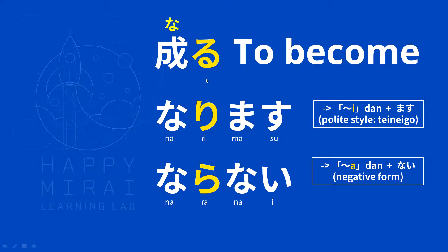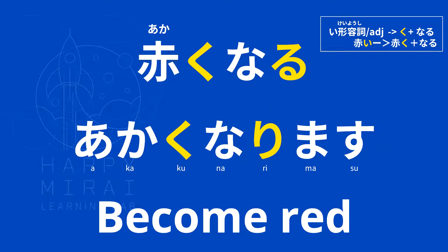This second なる (naru) — to become — is mainly written in hiragana and is used very often. なります (narimasu). ならない (naranai). Example: 赤くなる (akaku naru) — 赤くなります (akaku narimasu) — become red. When we use an i-adjective plus naru, we need to change the い (i) to く (ku), and then add naru.